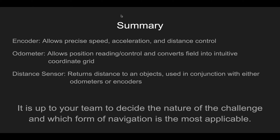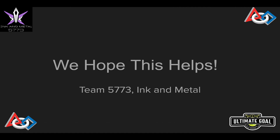To summarize: encoders allow precise speed, acceleration, and distance control with any type of motor and can be used in many different situations beyond just robot motion on the field. Odometers allow position reading and control, converting the field into an intuitive coordinate grid and enabling all sorts of motion on that grid. The distance sensor returns distance to different objects, and in conjunction with either odometers or encoders, you have a very strong form of navigation. Ultimately, it's up to your team to decide the nature of the season's challenge and which form of navigation is most applicable, requiring the least effort and the most payback. We really hope this helps — thanks so much for watching, and as Team 5773 Ink and Metal likes to say: innovate, implement, and inspire.